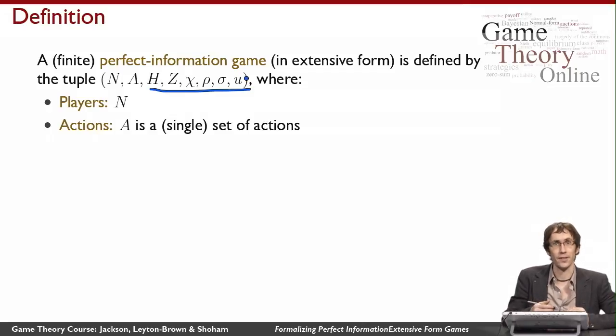All the rest of this stuff is going to be used to define the utility function. In order to get to utilities, we need to think about the temporal structure of the game. We're going to build up effectively a game tree where players take turns taking actions and eventually end up at some node where the game ends, with a utility marking that node.